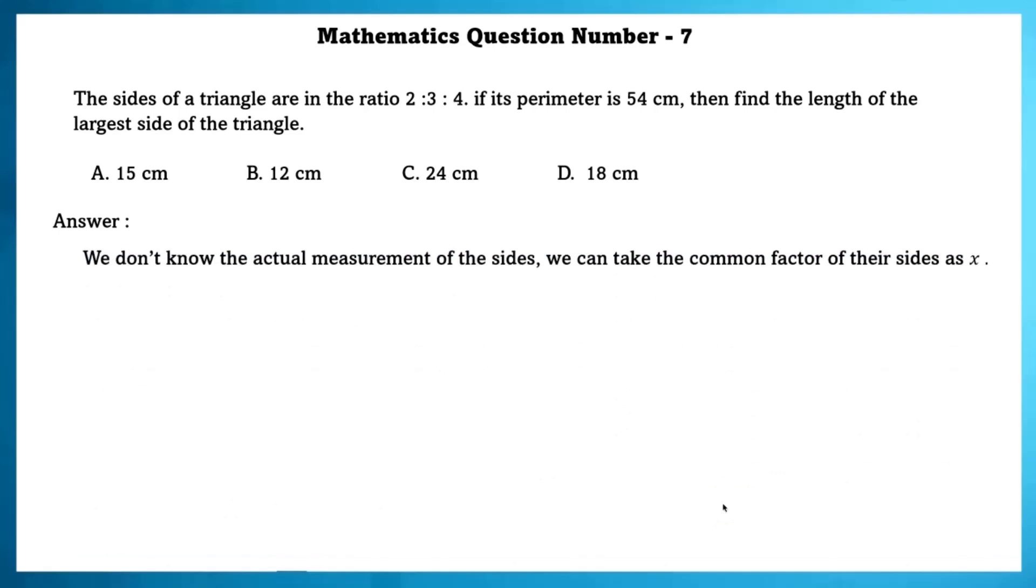We don't know the actual measurement of the sides. We can take the common factor of the sides as x. Given 2x plus 3x plus 4x is equal to 54. That is 9x is equal to 54. Using this we can find the value of x that is 6. Length of the largest side of the triangle is equal to 4x which is equal to 4 into 6 that is 24 cm.